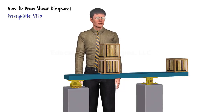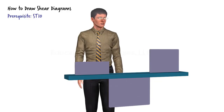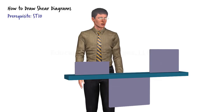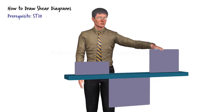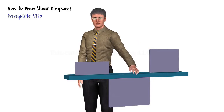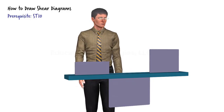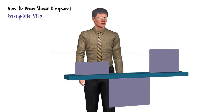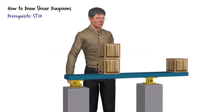For example, the shear diagram for this beam reveals that the internal force attains its maximum positive value in the right segment and it reaches its maximum negative value in the middle segment. Let's start by going through the process of drawing the shear diagram for this beam.